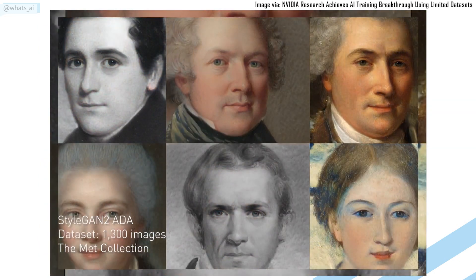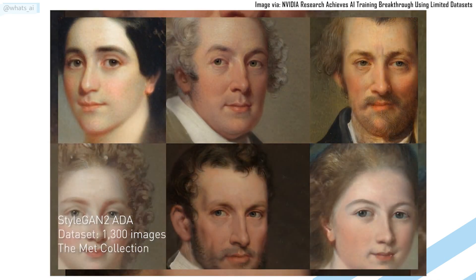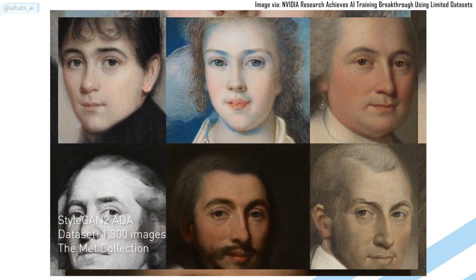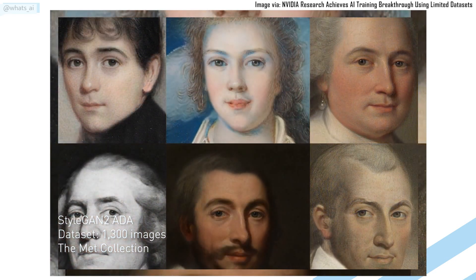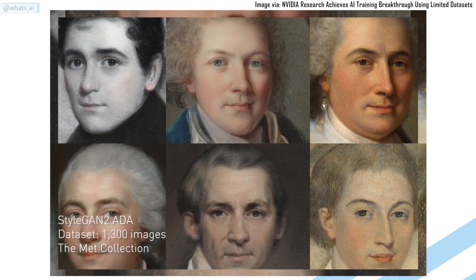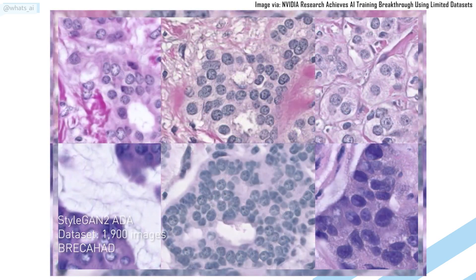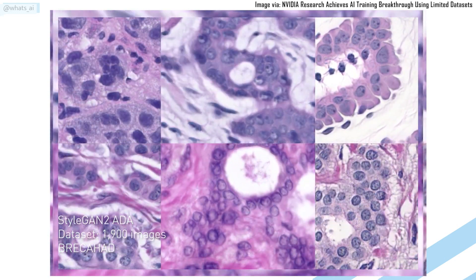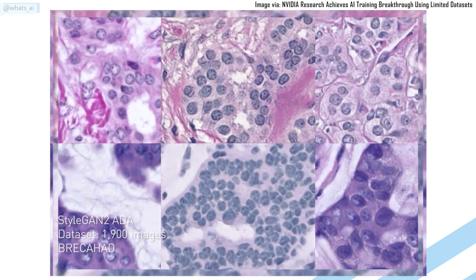As you know, GANs architecture train in an adversarial way, meaning that there are two networks training at the same time — one training to generate a transformed image from the input, the generator, and the other one training to differentiate the generated images from the training images ground truth. These training images ground truths are just the transformation results we would like to achieve for each input image. Then we try to optimize both networks at the same time, thus making the generator better and better at generating images that look real.